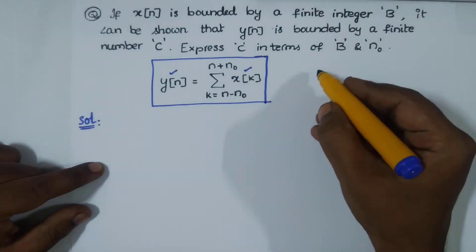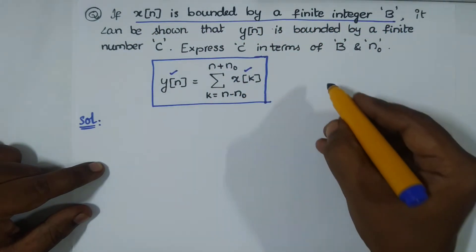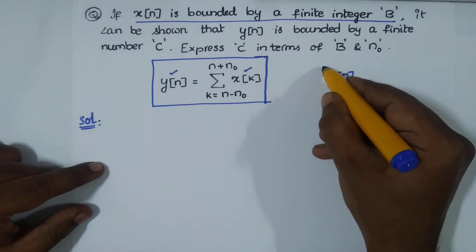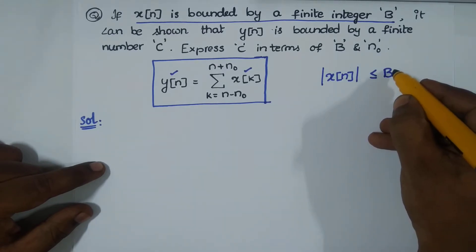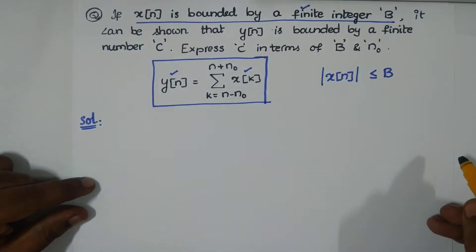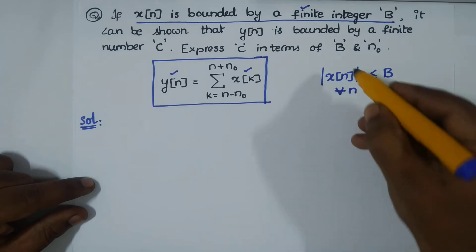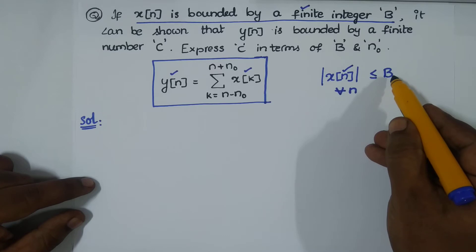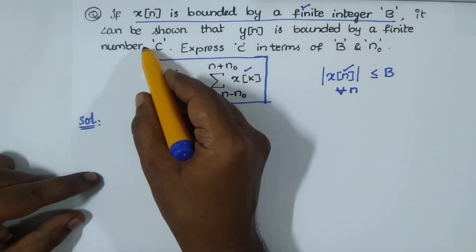In this scenario, he also gave us that x[n] is bounded. x[n] is bounded by a finite integer B. What is the meaning of this? I take its absolute value, so |x[n]| is bounded. This B itself is finite, given like this. For all n, x[n] is bounded by a finite integer B.